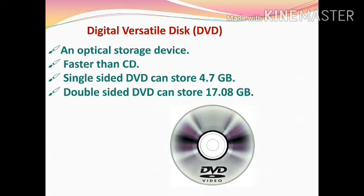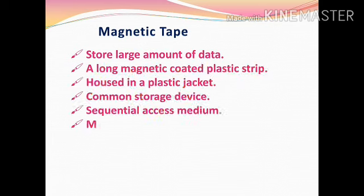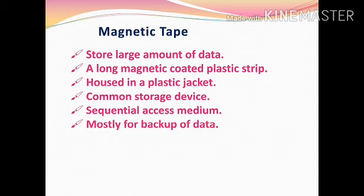The next secondary memory is magnetic tape. A magnetic tape is used for storing a large amount of data. It is a long magnetic quarter plastic strip, like a cassette in radios. It is housed in a plastic jacket. It is a common storage device on most mainframe computers and some personal computers.